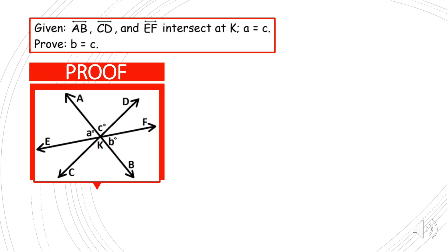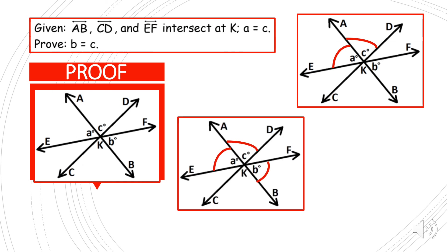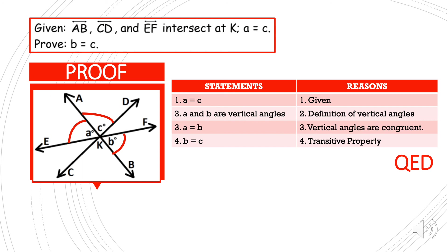Finally, problem seven. We were given that lines AB, CD, and EF intersect at K and that angle A is equal to angle C. Now we have to prove that angle B is equal to angle C. We can prove that angle B is equal to angle C by transitive property, because we can prove that angle A and angle B are also congruent with the vertical angle theorem. Statement number one: A is equal to C, given. Statement number two: A and B are vertical angles by the definition of vertical angles. In number three: A and B are congruent because vertical angles are congruent. And finally, B is equal to C because of the transitive property. QED.